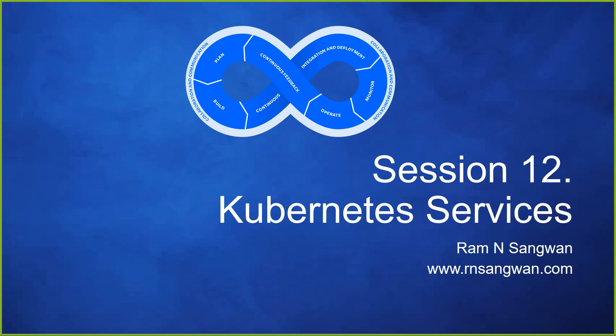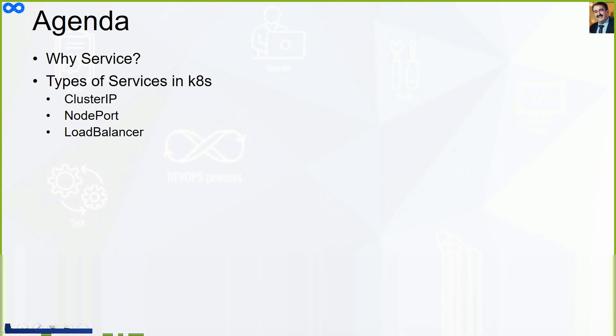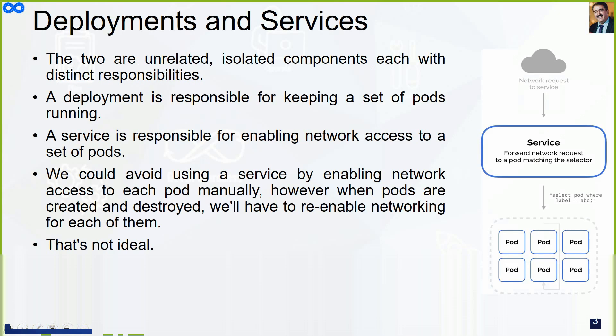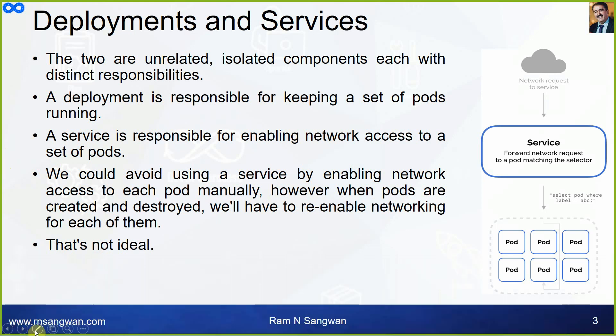Session 12: Kubernetes services. This is more about communication. What you did in lab 5 was just a small part of it. What are the possible ways for communication among pods? Types of services in Kubernetes: ClusterIP, NodePort, LoadBalancer — there are more, but focus will be on these. Let's understand deployment and services and what is the relationship. These two are unrelated, isolated components each with distinct responsibilities.